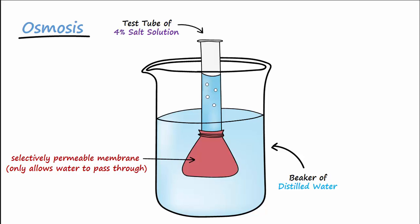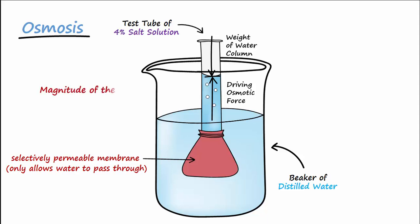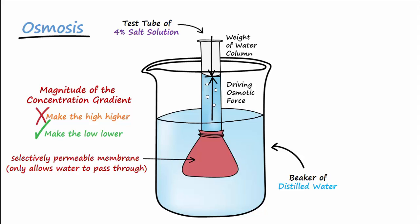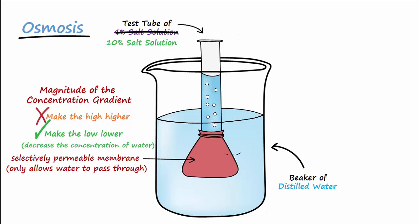The water column will rise until the driving osmotic force is equal to that of the weight of the water column in the opposite direction pulling the water down. The degree to which the water rises is determined by the magnitude of the concentration gradient. You can't make the high any higher, since you can't concentrate water any more than distilled water, but you could make the low lower by concentrating the salt in the salt solution to decrease the concentration of water. If the salt solution was changed to a 10% salt solution, you would be changing the magnitude of the concentration gradient, and you would now have a greater force for water to enter the column, driving the column of water to a higher level.